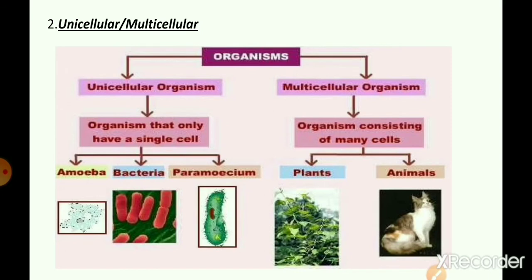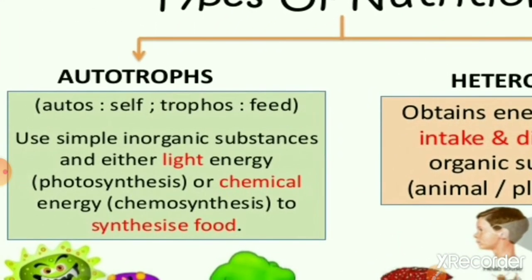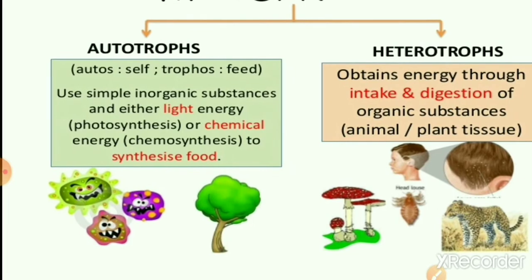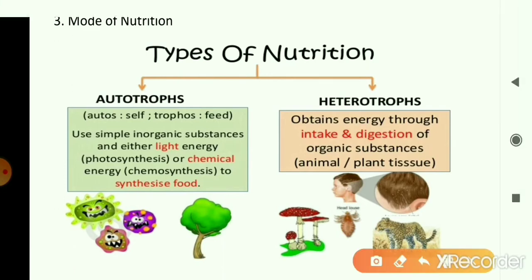Body design becomes the next important feature for classification. After that, the mode of nutrition is used. Organisms can be autotrophic — making their own food from simple inorganic substances using light or chemical energy — or heterotrophic — obtaining ready-made organic matter from outside sources. Because mode of nutrition differs, the body designs also differ, making it the third important feature. Plants cannot be placed with animals in one group because they have a different mode of nutrition.